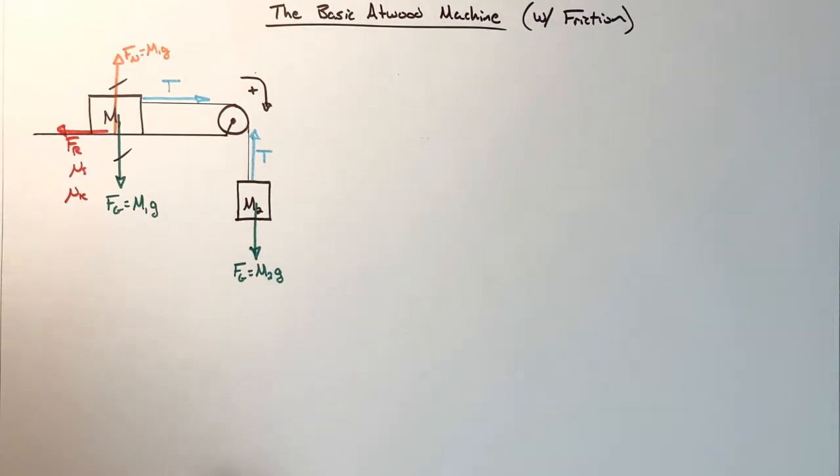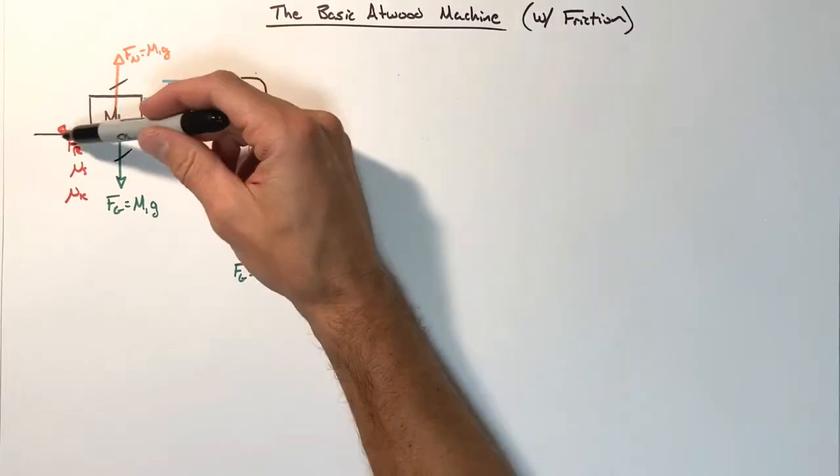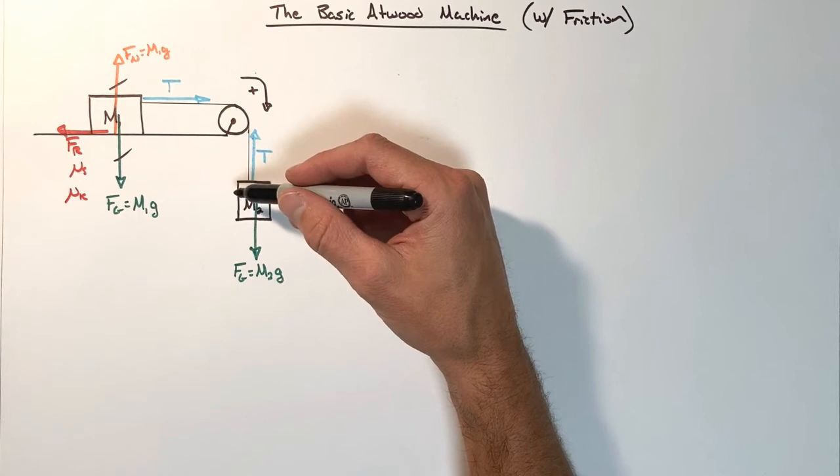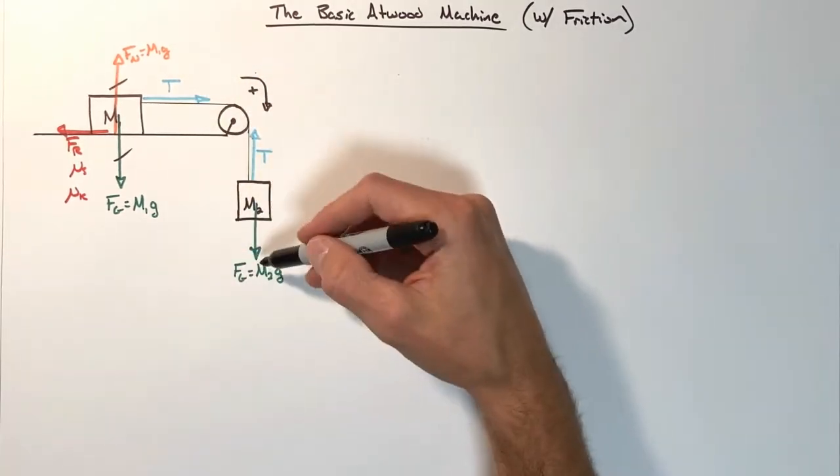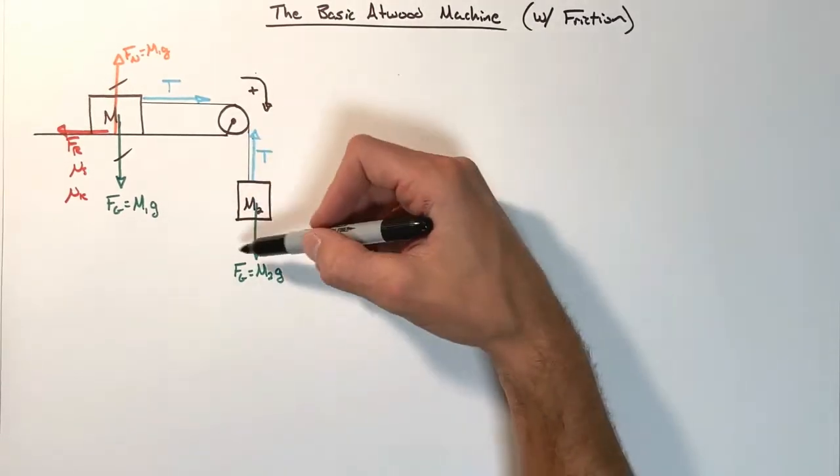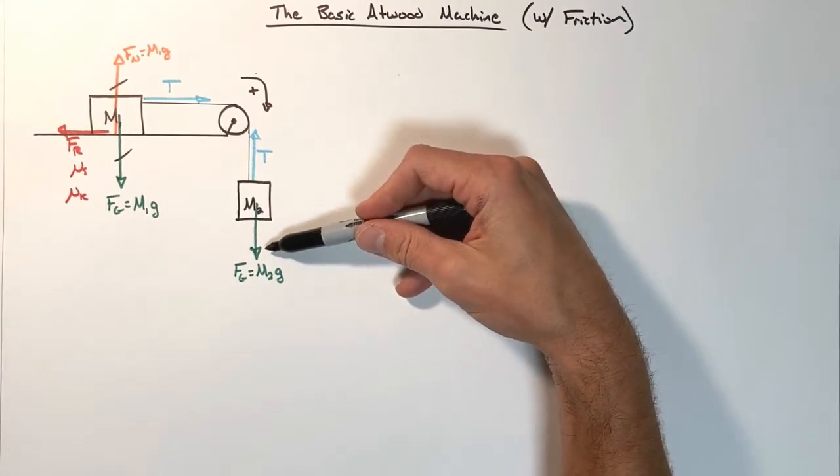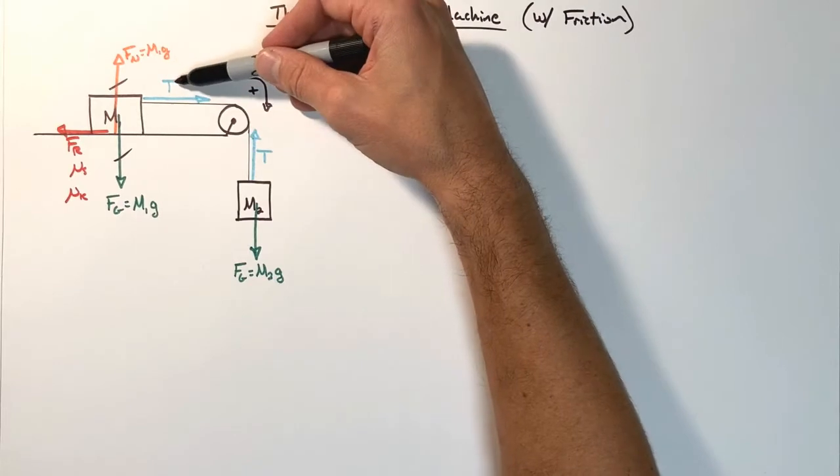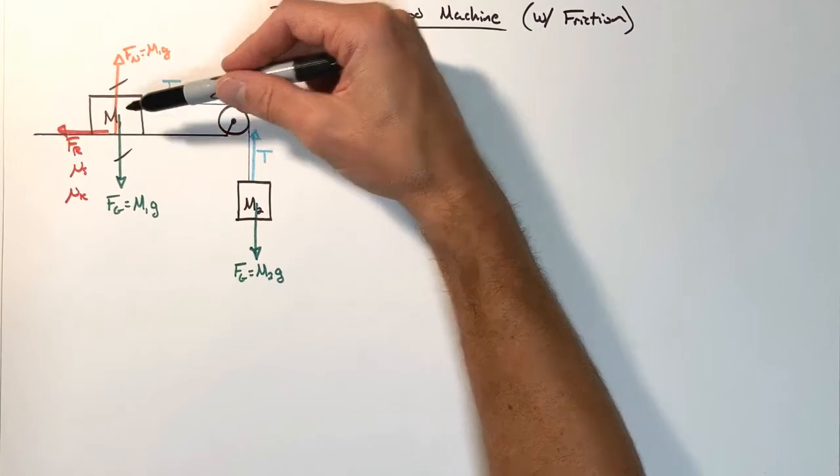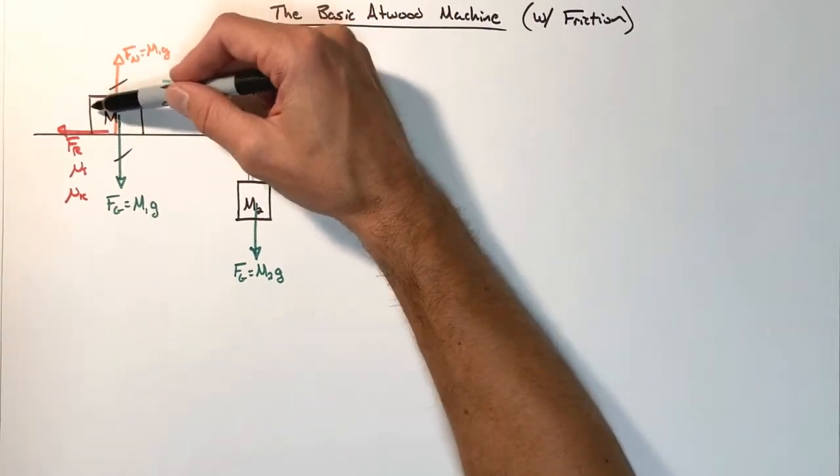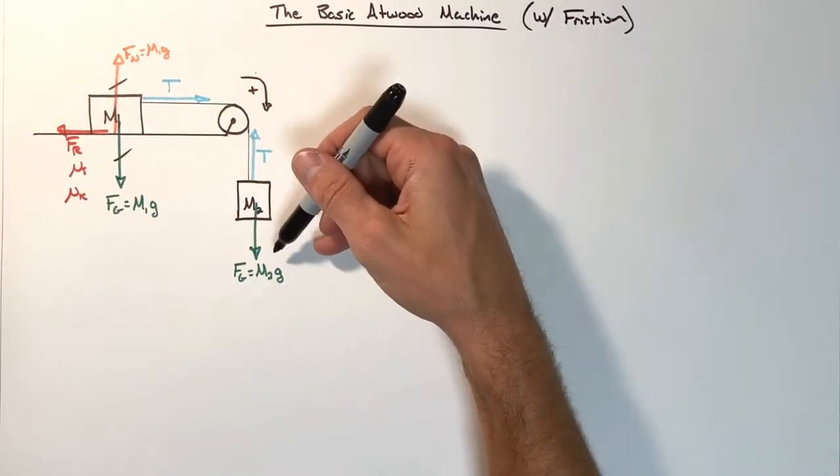So the first thing we're going to do is look at the conditions that are required in order for the system to move. In the situation where the friction is large enough where this block doesn't move, that means this block is not going to move either. And so what we get is a nice, neat balance of forces. The downward force by gravity, trying to pull this block and this block with it, is going to be canceled out, ultimately by friction. The downward force by gravity, if this block is not accelerating, is going to have to be equal to the tension upward.